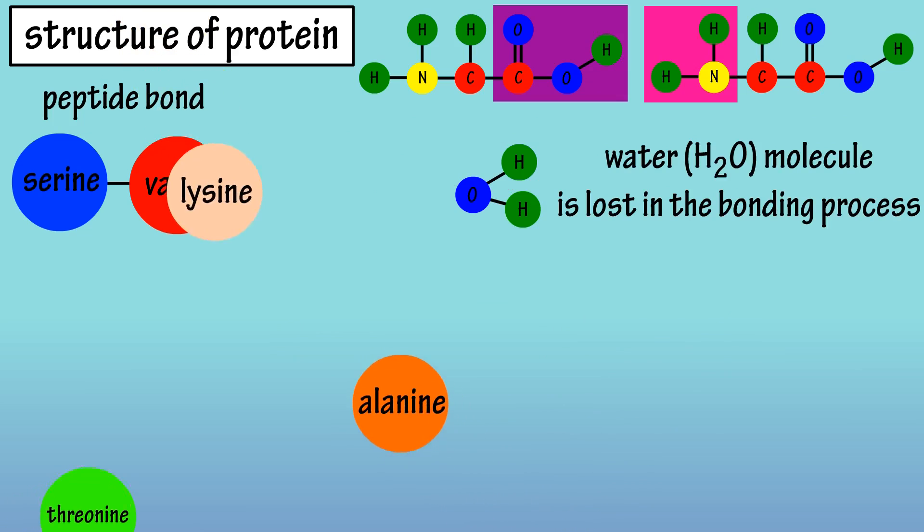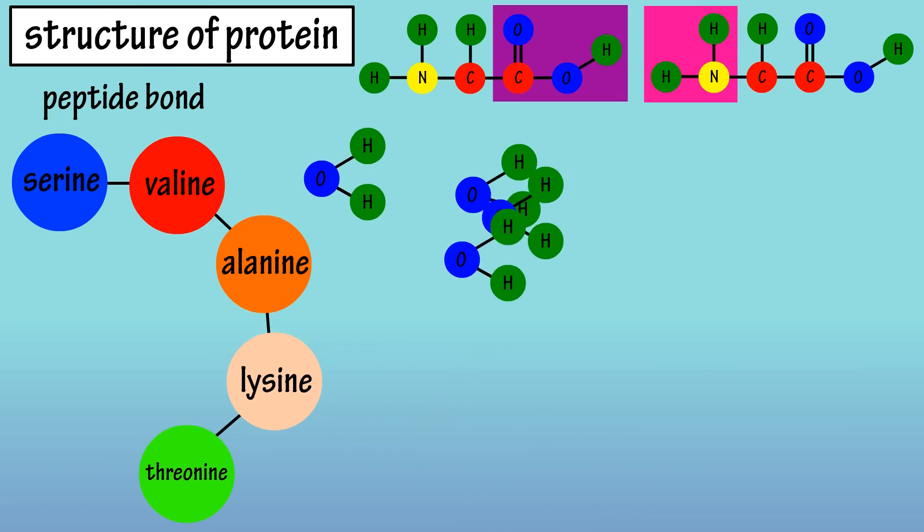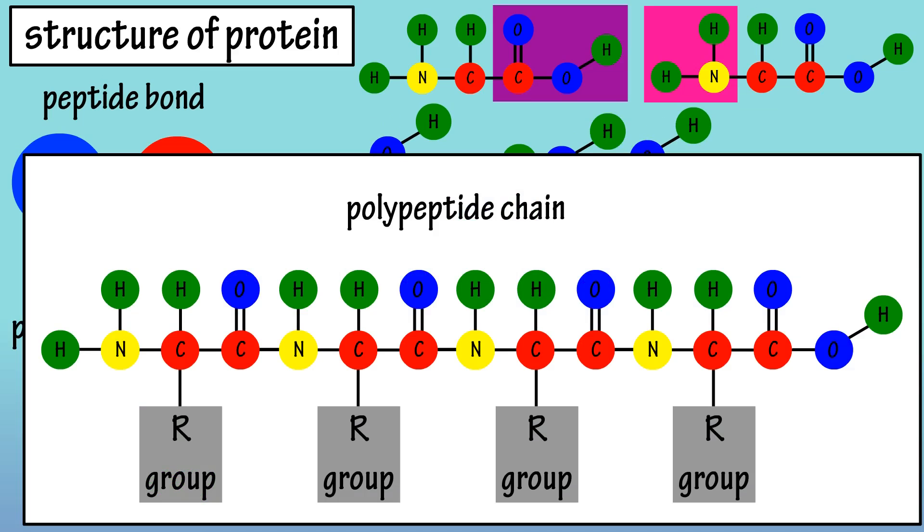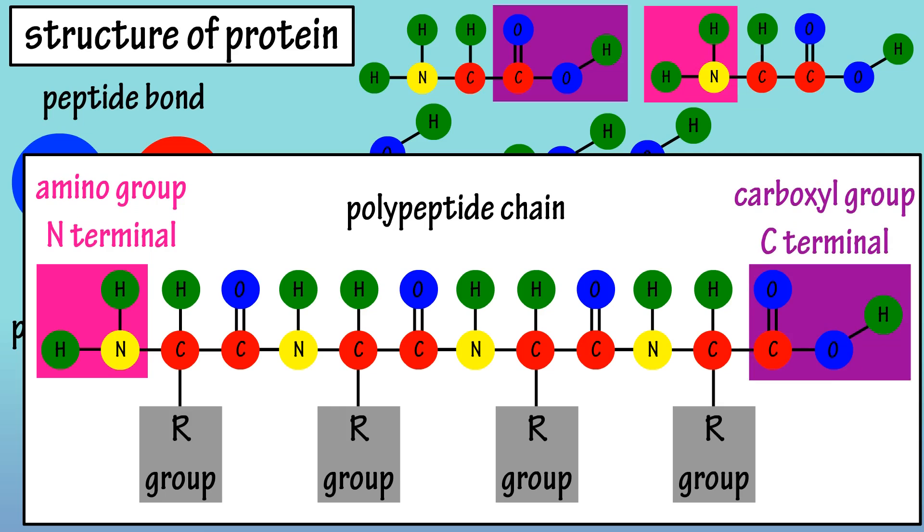More amino acids can link in, again releasing water molecules, and form what is called a polypeptide chain. As you can see in this polypeptide chain, at one end, an amino group remains, called the N-terminal, and at the other end, a carboxyl group remains, called the C-terminal.